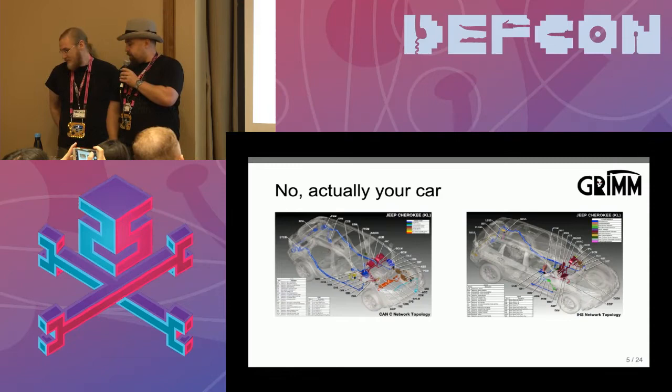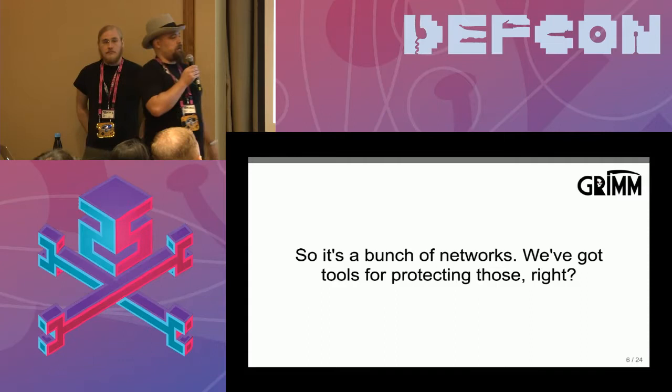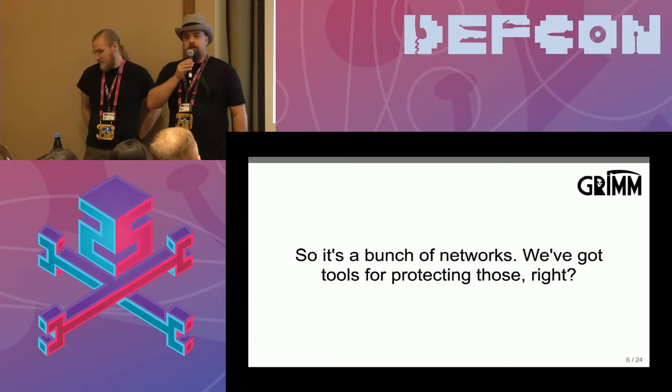There's a bunch of stuff on there like CAN, Ethernet, LIN, wireless, Wi-Fi, Bluetooth, cellular radio, and wireless for your tire pressure sensors. They're going to be putting another radio on there for autonomous driving called a DSRC radio. I just see attack surface.